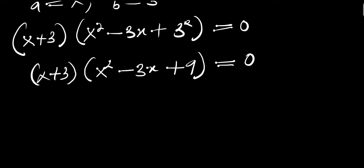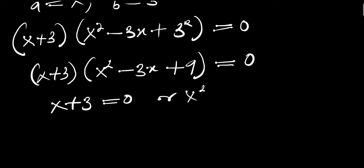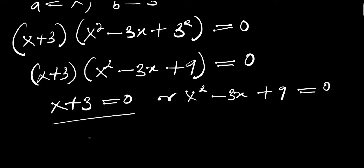We can equate each factor to zero. We have x + 3 = 0 or x^2 - 3x + 9 = 0. Solving the first gives x = -3, which is one of the solutions. Now we need to solve the quadratic equation to find the other solutions.